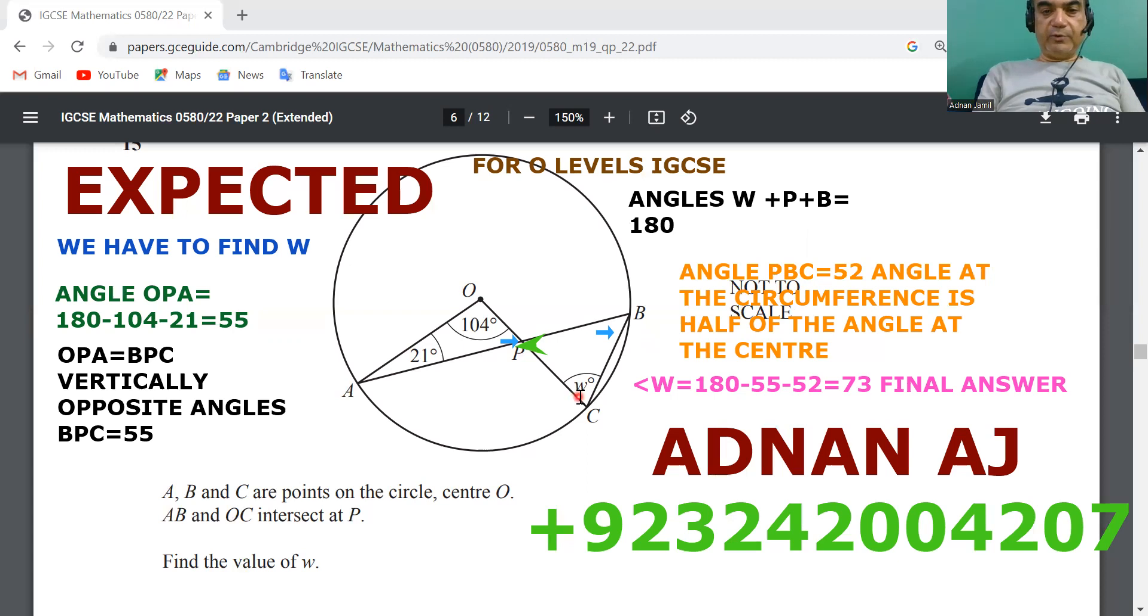Now we come to, we have all the things in the triangle PBC. The two angles, that is 55, this is 55 and 52, so we'll subtract it from 180 and you will get 73. You can see that I have given the reasons as well showing the steps as well.